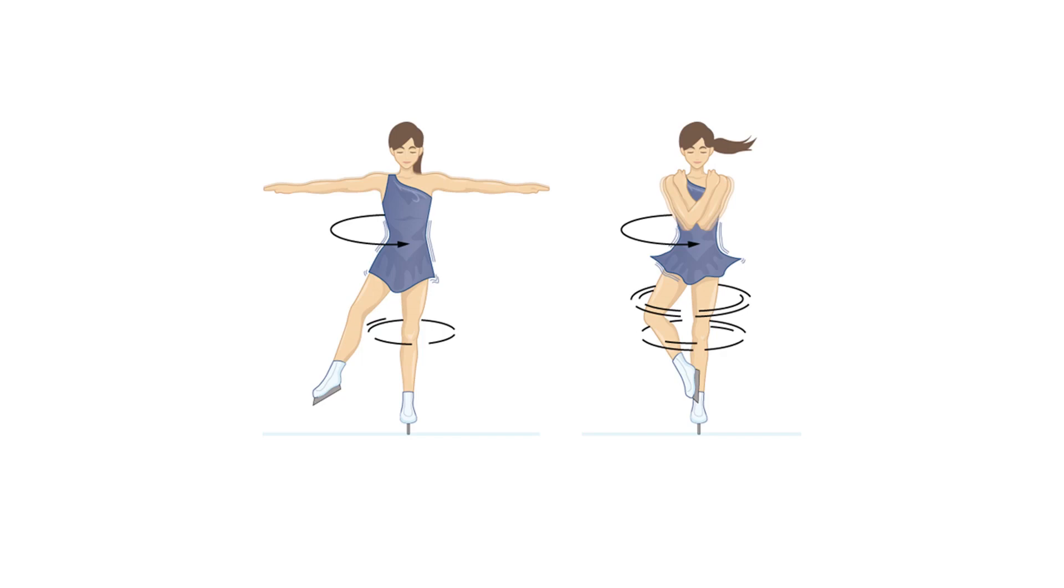We've all been taught that an ice skater will speed up if they pull their arms in while spinning. This is because an object's angular momentum, which is its moment of inertia times its angular velocity, stays constant.